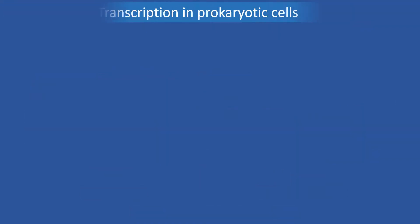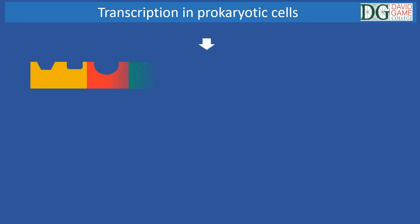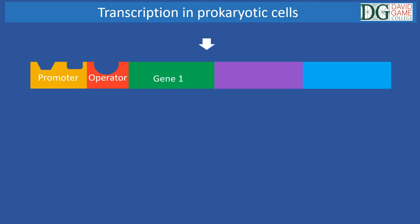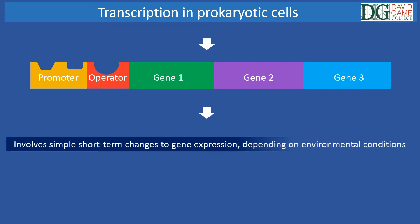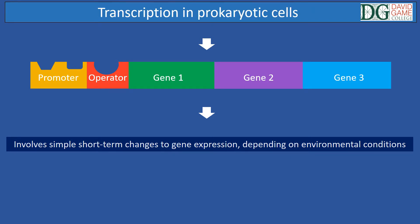Control of transcription differs between prokaryotic and eukaryotic cells. In prokaryotic cells, the operon is the unit of transcription. This involves simple short-term changes to gene expression depending on the environmental conditions. This video will not explore how an operon such as the lac operon works, but operons are well documented in biology books and other videos.